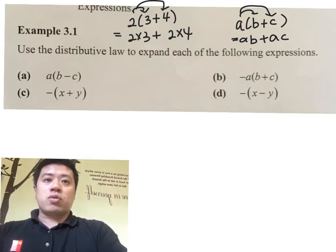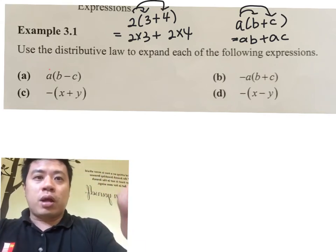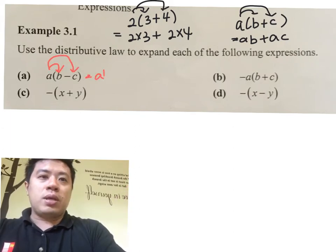Let's look at A. A is quite straightforward. If you distribute A to B minus A to C, you get AB minus AC.